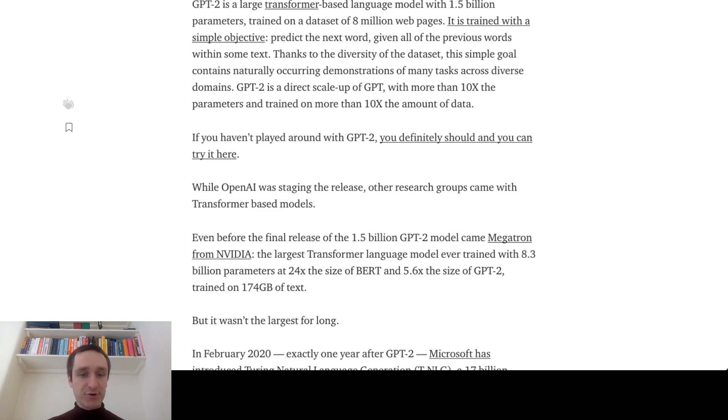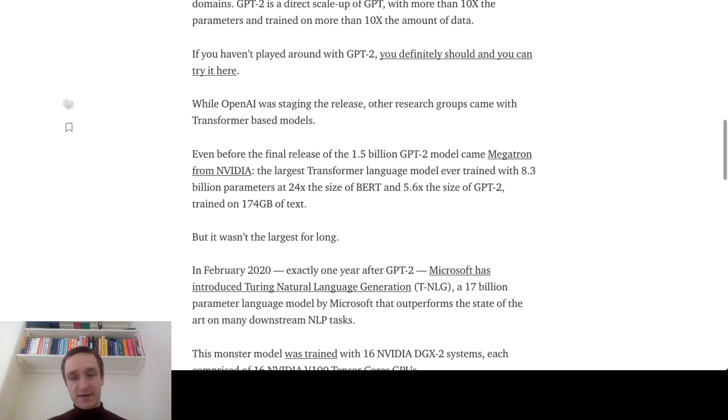That was the largest transformer with 8.3 billion parameters, over five times larger than GPT-2. It was trained on a lot of text.